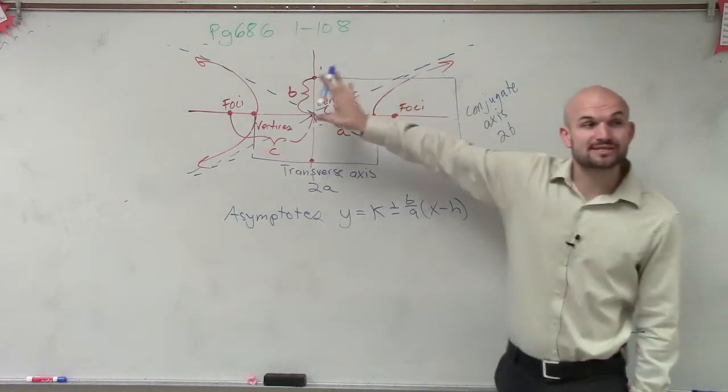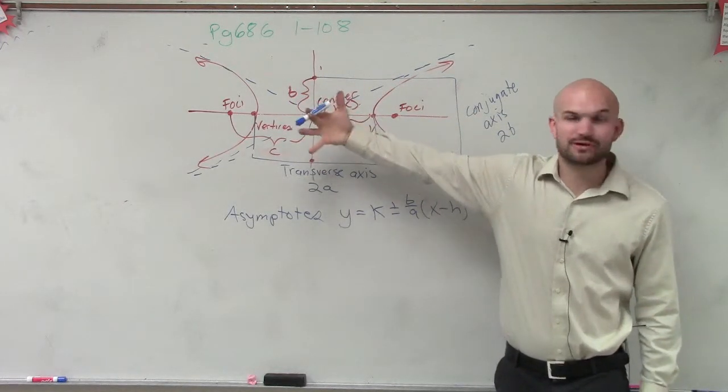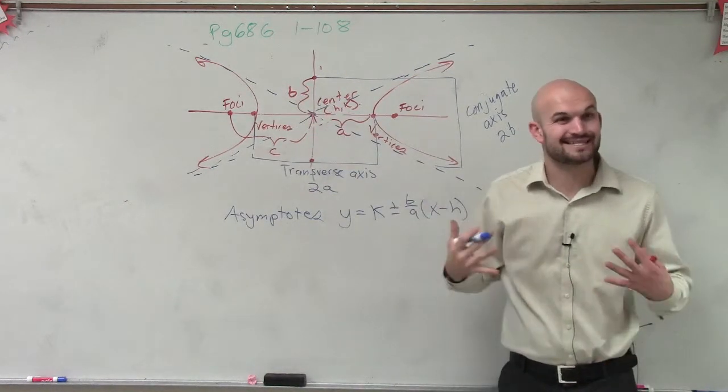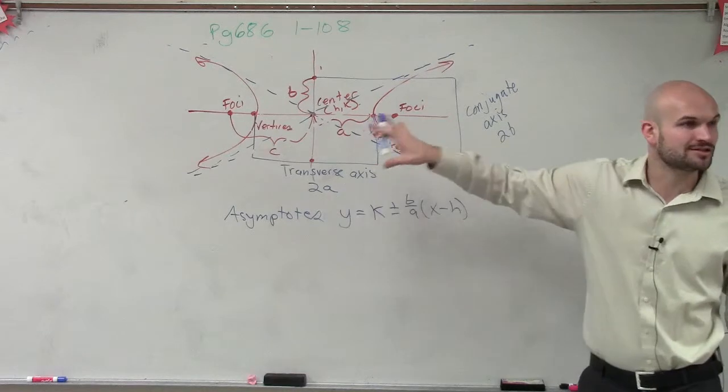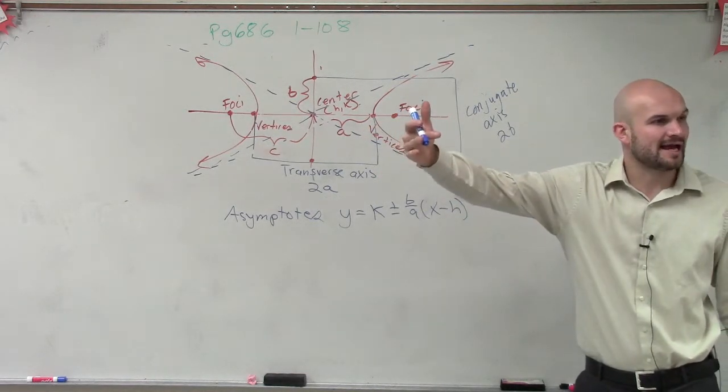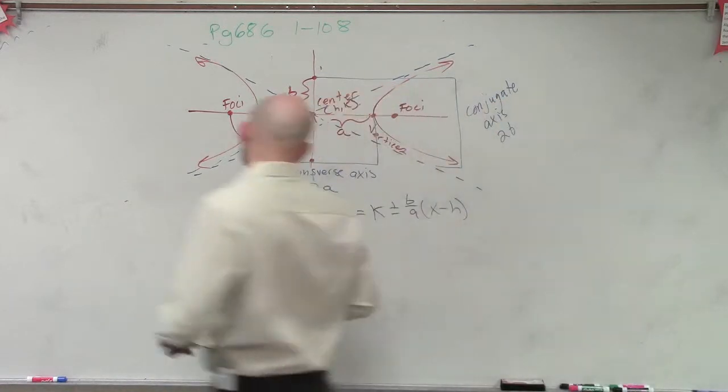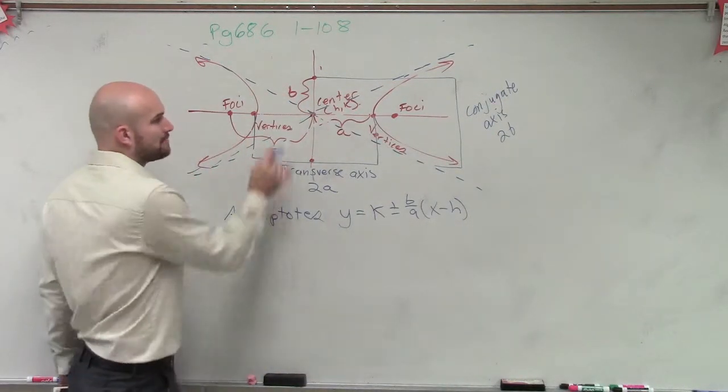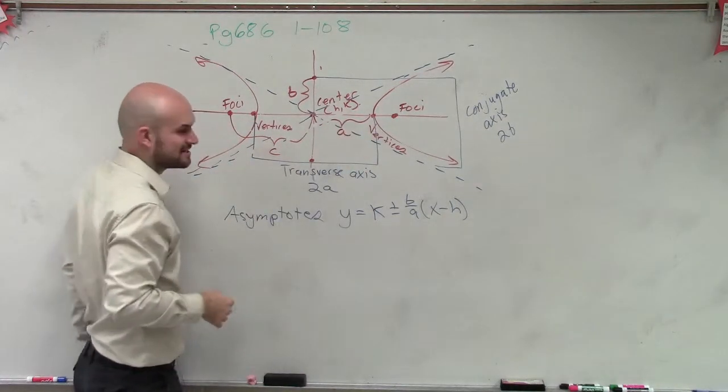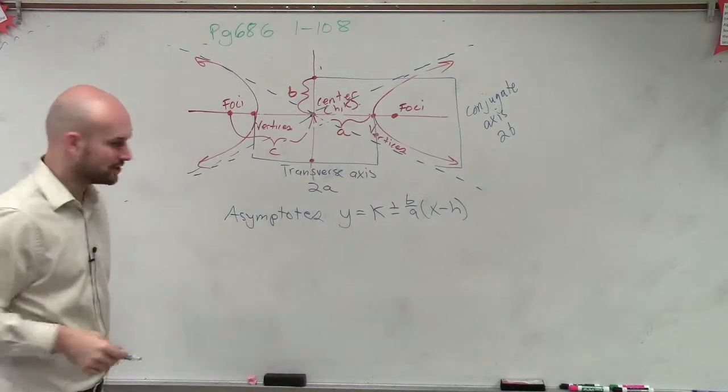Now, notice, ladies and gentlemen, what I'm doing right now is I'm giving you everything for a horizontal. For the vertical, things are going to change. And the last thing I just need to do is, what does this equation look like? What is the equation of the hyperbola? How is it different than an ellipse?